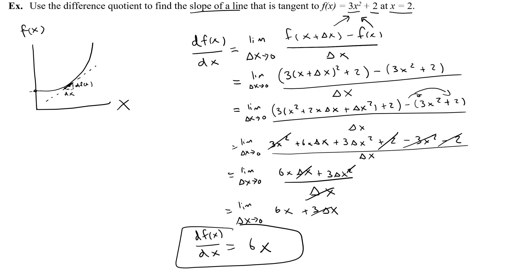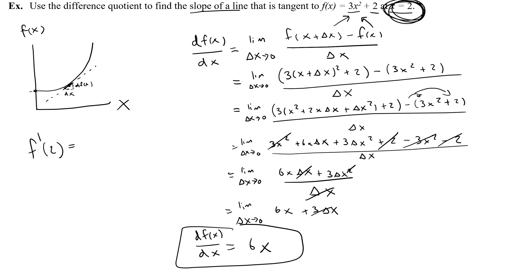This is an equation I can use to find the slope of a tangent line at any point on the original function. Going back to the problem — find the slope at x equals 2. Using the derivative, f prime of 2 equals 6 times 2, which is 12. So the slope of the tangent line at x equals 2 is 12.